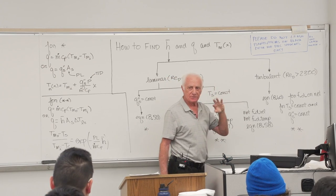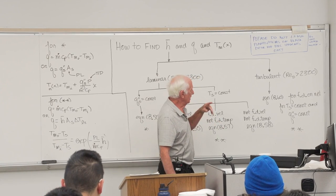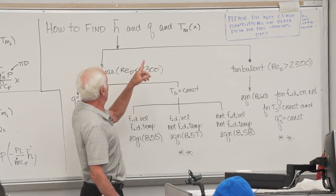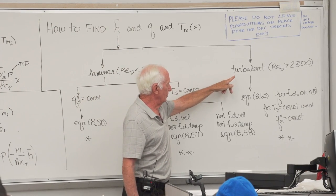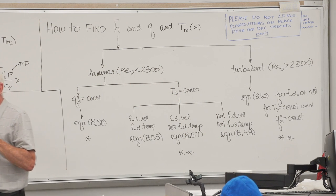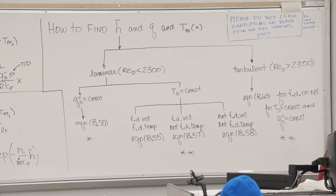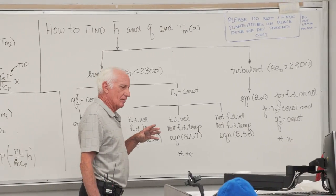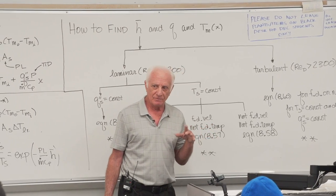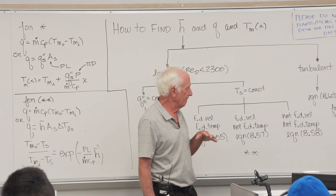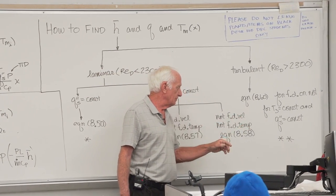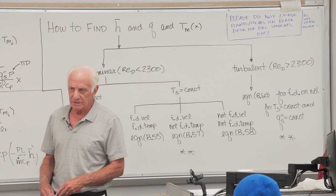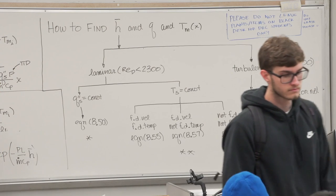Let's do turbulent first because it's the easier of pretty much kind of any of these. Turbulent flow, we're going to use equation 860. It doesn't matter if the flow is fully developed or not, doesn't matter if we have constant wall surface temperature or constant heat flux at the surface. There's only one choice in turbulent flow.